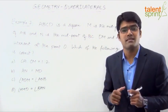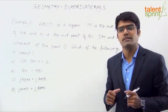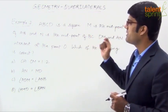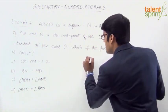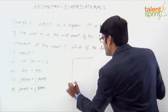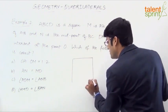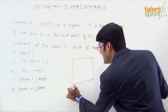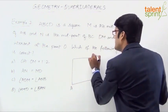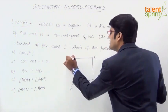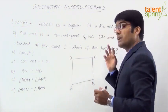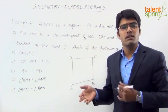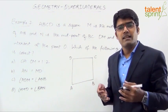It's all about constructing it properly, so let us do it step by step. ABCD is a square, so let us draw a square. In a square, all 4 sides are equal. The moment we think about a square, we should recall all the properties — all 4 sides are equal and all angles are 90 degrees.